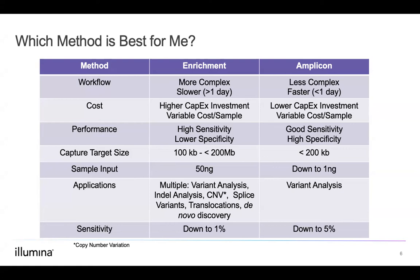Now let's discuss why you might choose an amplicon approach to targeted resequencing. Amplicon workflows lend themselves well to new NGS users for several reasons: lower capital equipment costs, and methods that are historically easier and faster than enrichment or hybrid capture methods. Another factor is the low input requirement — amplicon panels typically offer success with input amounts down to one nanogram. Amplicon panels also enable smaller targeted panels; for example, if you only want to interrogate five to ten genes, an amplicon approach would be more effective due to the specificity of amplification, reducing sequencing cost per sample and overcoming minimum probe requirements associated with enrichment methods.